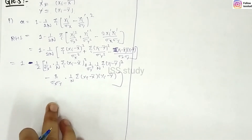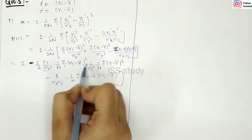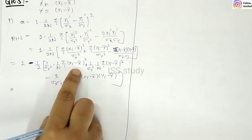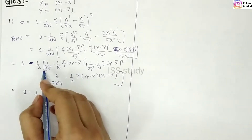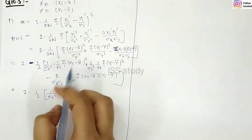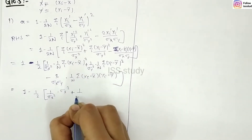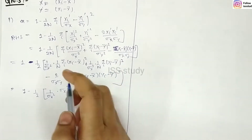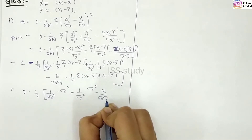Looking at these terms: the expression (1/n · Σ(x_i − x̄)²) is your variance of x formula, which equals σ_x². Similarly, the corresponding y term gives σ_y². So we have 1 minus 1/2 times (1/σ_x² · σ_x² plus 1/σ_y² · σ_y² minus 2·σ_x·σ_y).